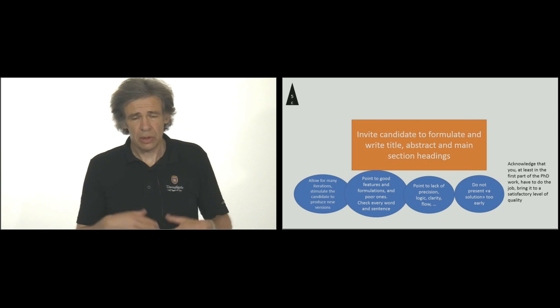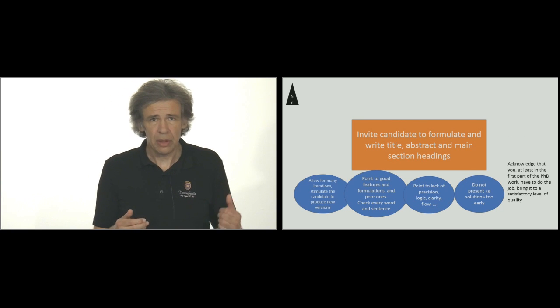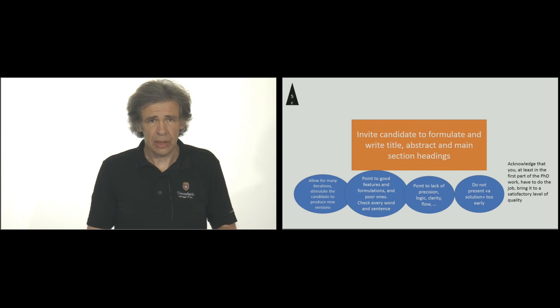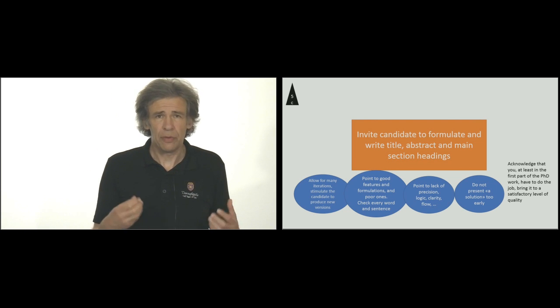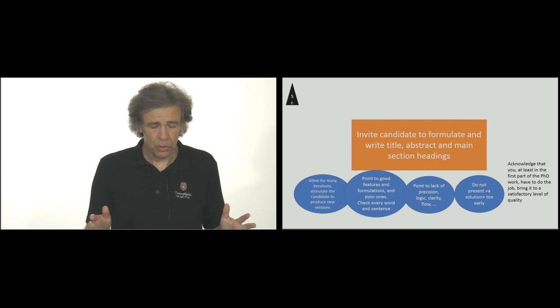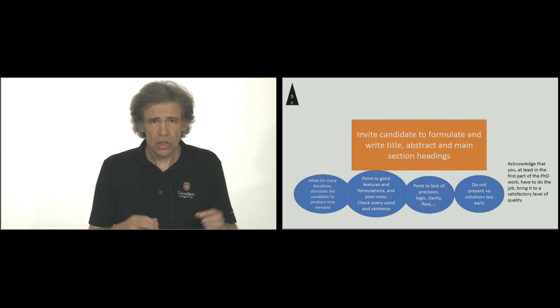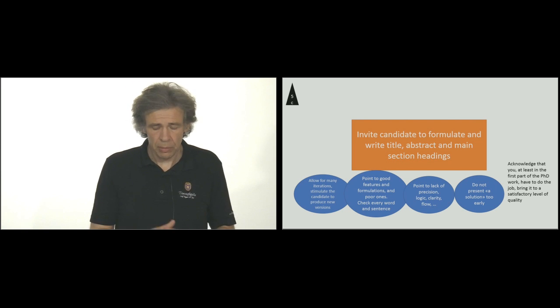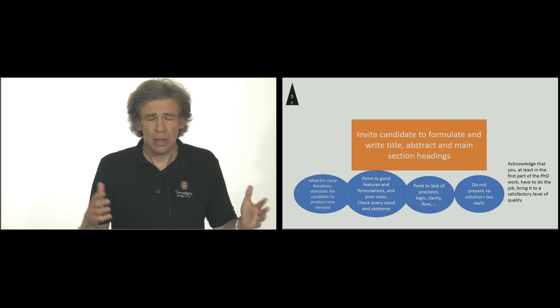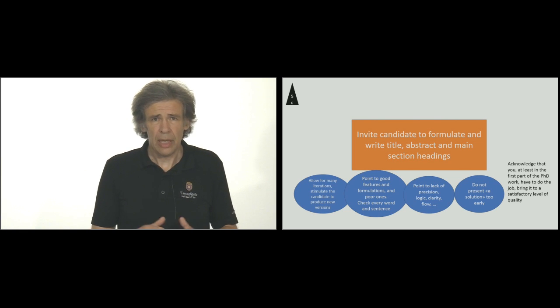We go on with the invitation process for title, abstract and main section headings. You allow for many iterations and stimulate the candidate to come up with a first version. Then you point to good features and formulations, what are the poor ones. Check every word and sentence. Point to lack of precision, logical problems, clarity problems, lack of flow.